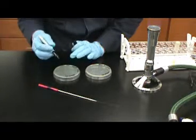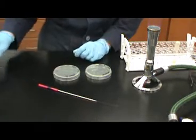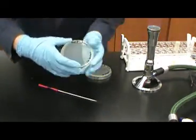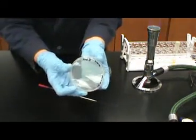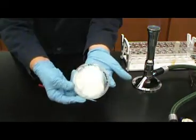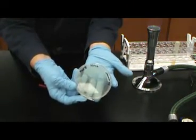For best results, we suggest that you run two isolation streak plates the first time you attempt isolation. You should label the plate with your name, the date, and the number of your unknown.